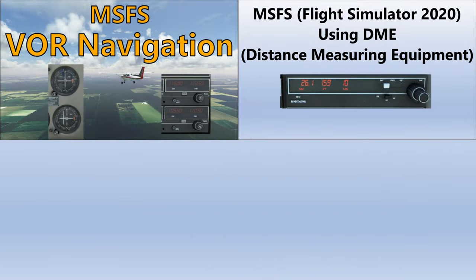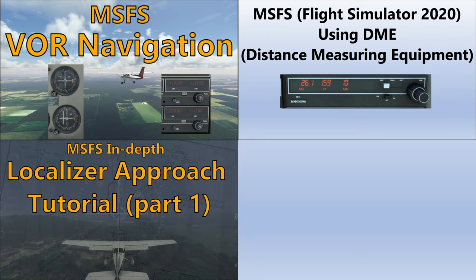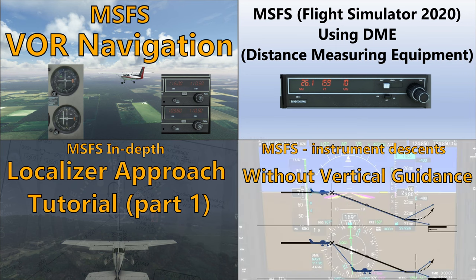You'll also want to be familiar with the basics of using VORs and distance measuring equipment or DME before trying to fly a localizer approach. You also need to be familiar with the techniques you can use to descend on an approach without vertical guidance. This is covered in part 1 of this lesson series, and there's also a more in-depth discussion in a separate video.